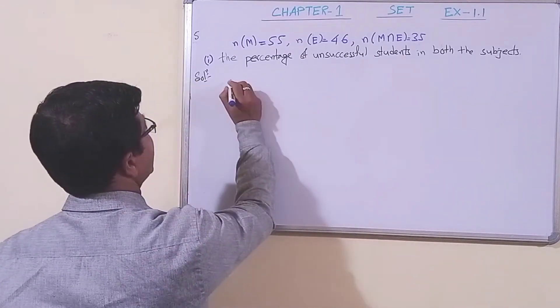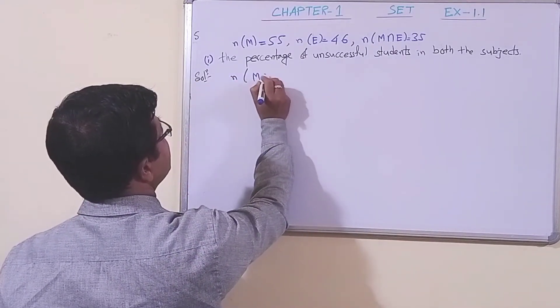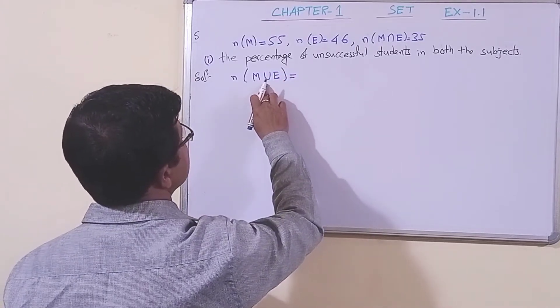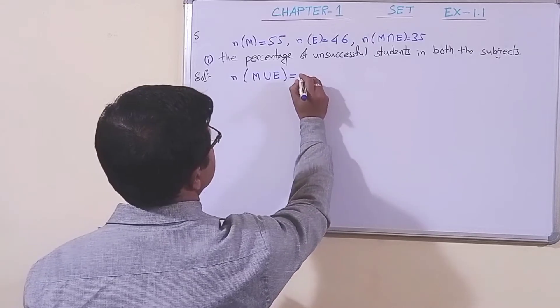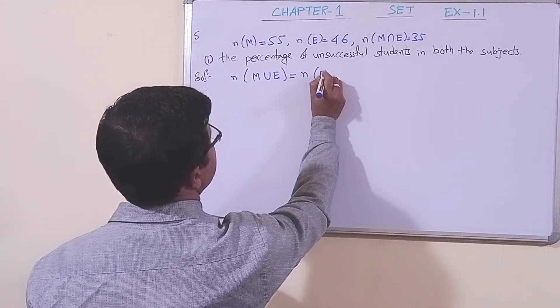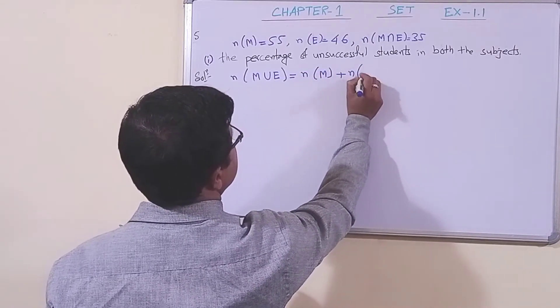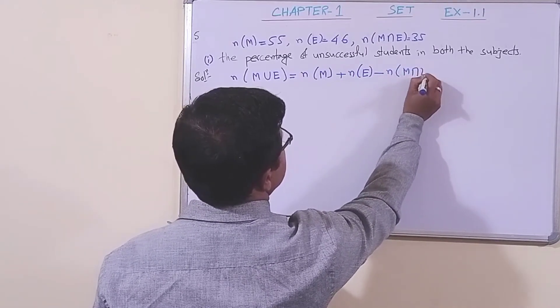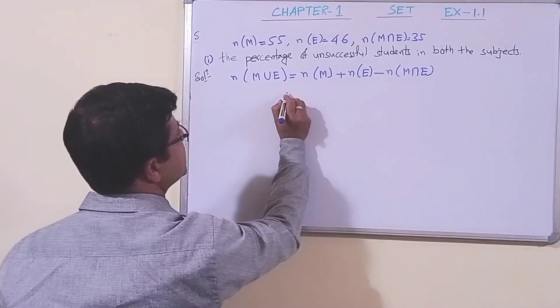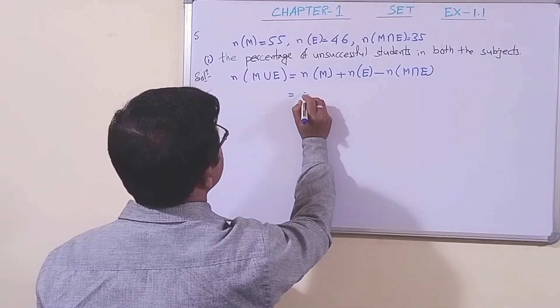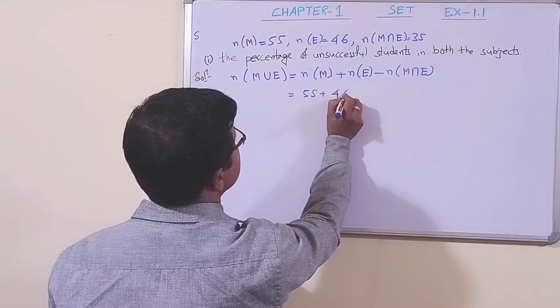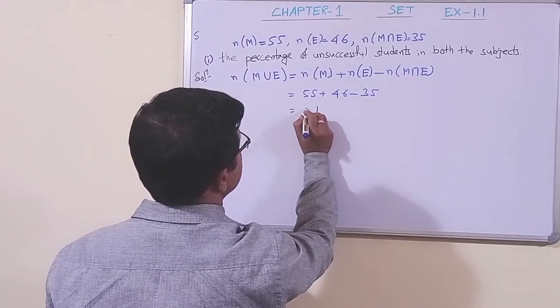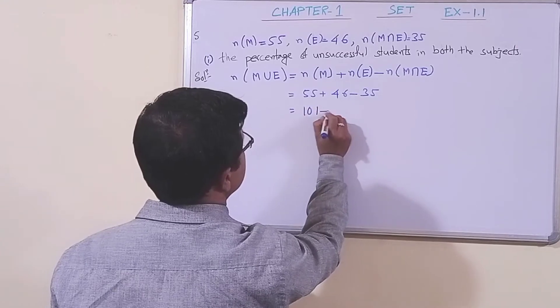Let us find n(M∪E), which means the number of students who passed at least in one of the subjects. This is equal to n(M) + n(E) - n(M∩E). This is just the basic formula we learned. This is 55 + 46 - 35, so this is 101 - 35.